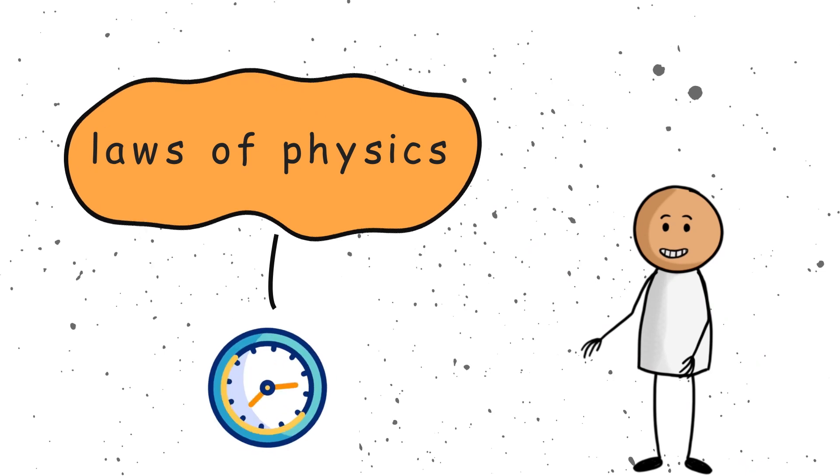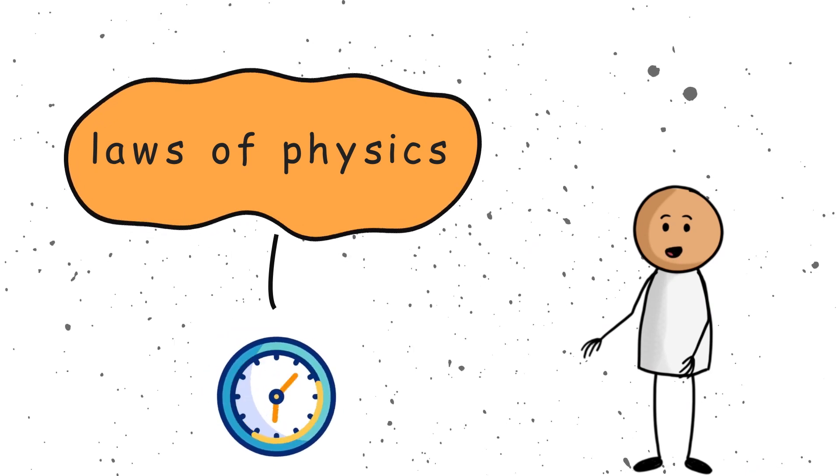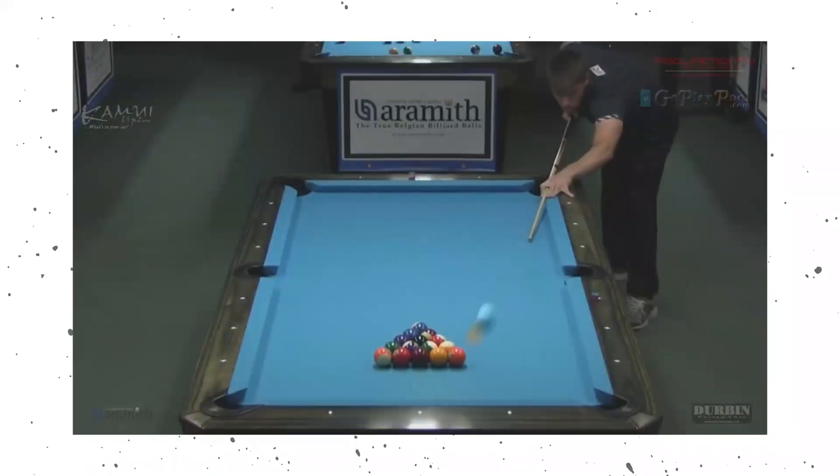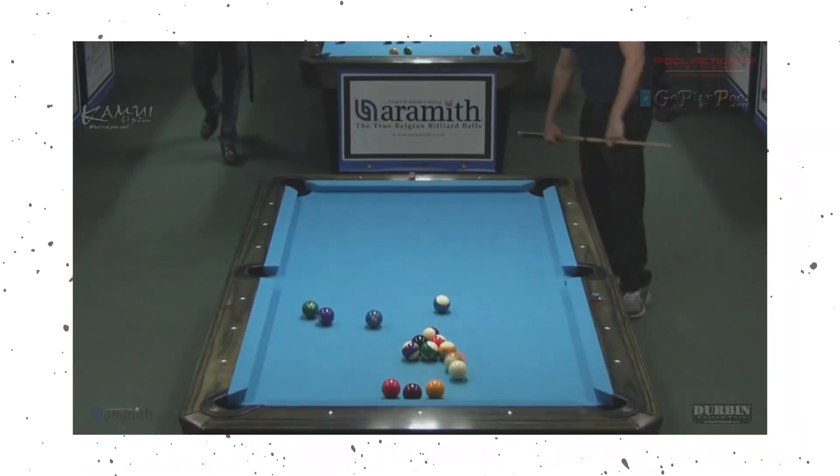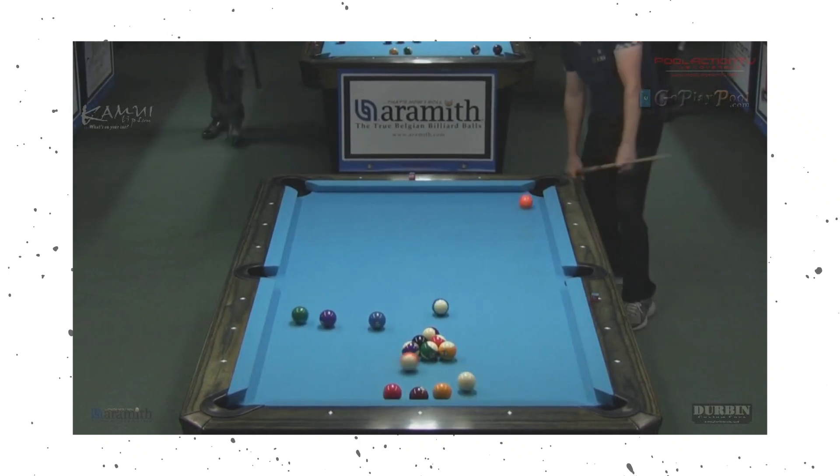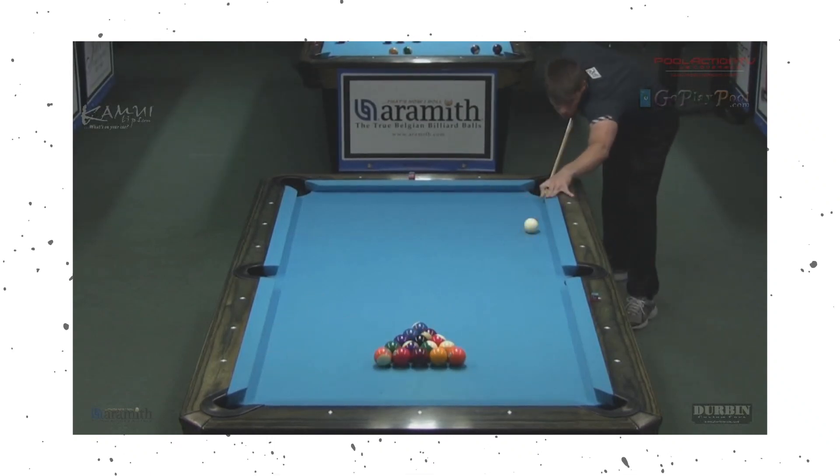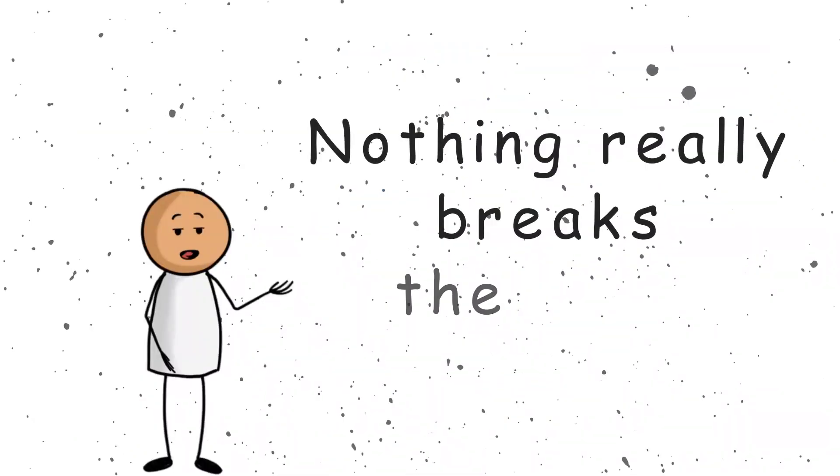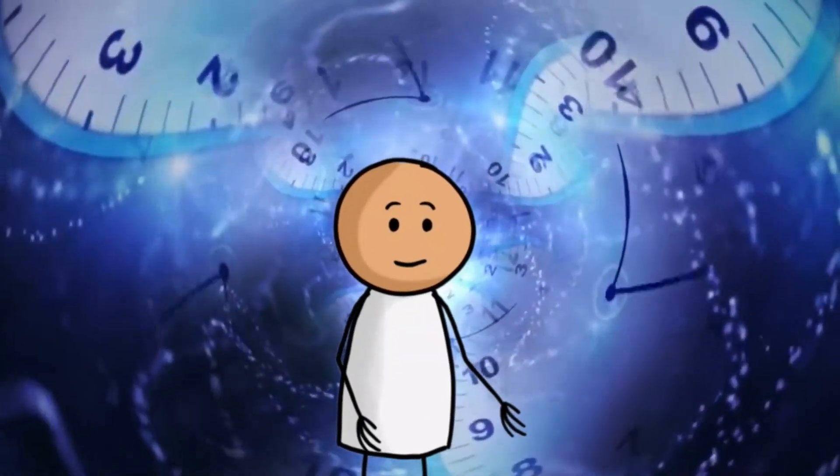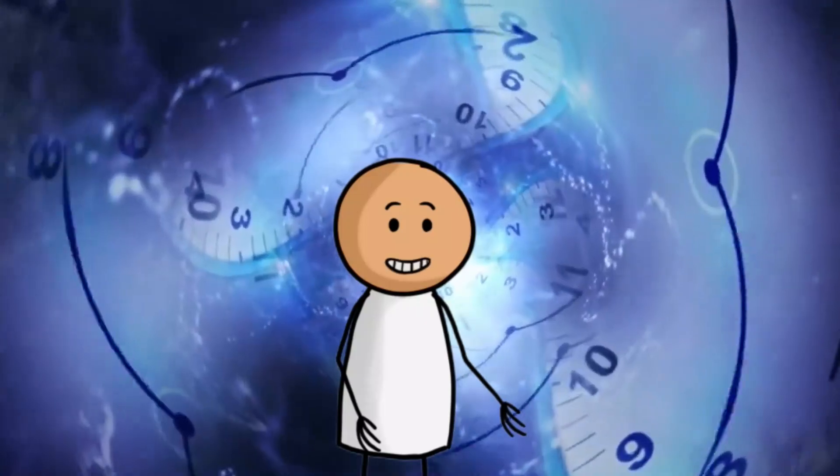But here is the weird part. The basic laws of physics do not care if time moves forward or backward. They work just fine if you run them in reverse. Imagine watching a movie of billiard balls smashing into each other. If you play it backwards, the balls bounce back exactly the way they came. Nothing really breaks the rules. So why does time feel like it only goes forward? Well, that is where the arrow of time comes in.